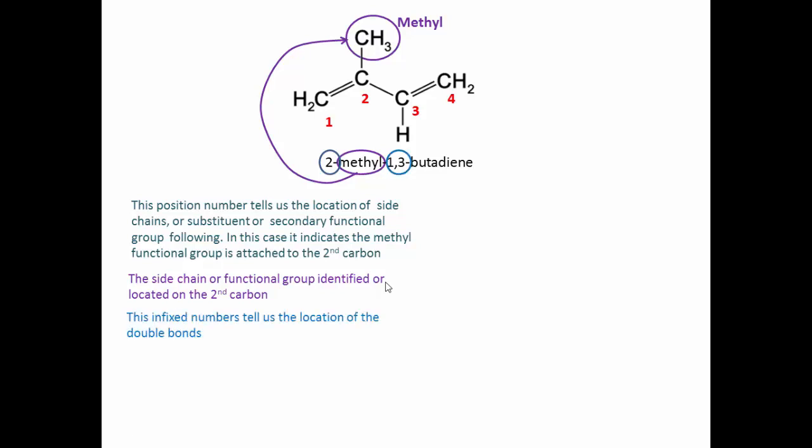Then we have another locational or positional number — this is an infix number. It tells us the location of the suffix functional group, in this case the double bonds. The suffix functional group is attached to the main chain, and this main chain has four carbons, so we have 'but-' indicating four carbons.